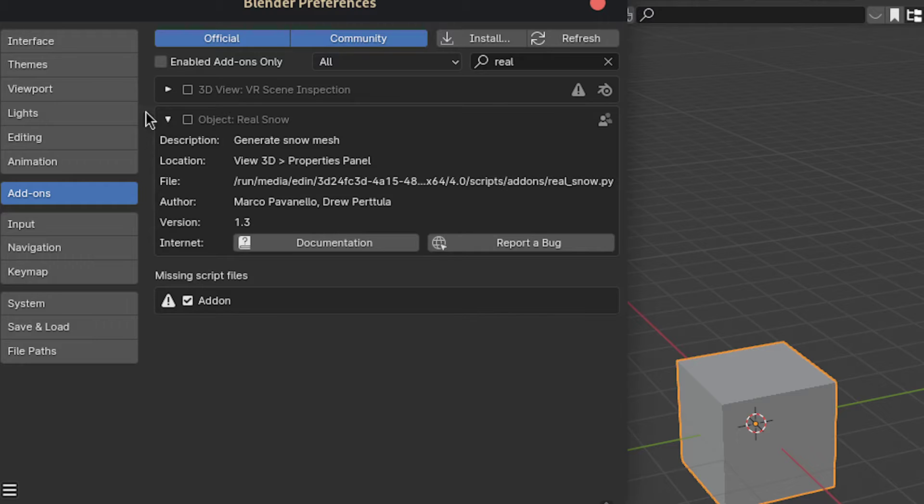First, the base snow. For this we'll be using the real snow add-on, which is included in Blender by default. So enable it and it should appear in the side menu.